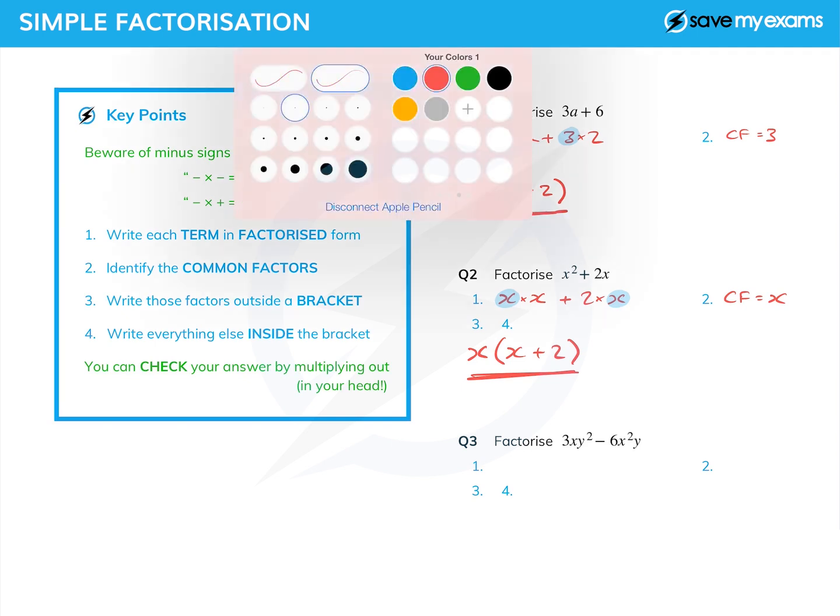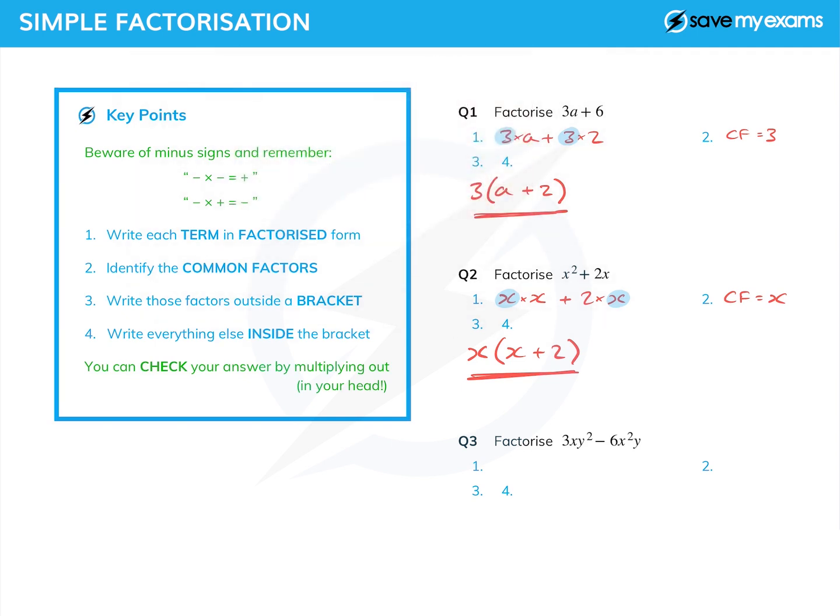Let's have a look at question 3. It's just a little bit more difficult, but only because the two terms we're dealing with—3xy² and -6x²y—are a bit more complicated.